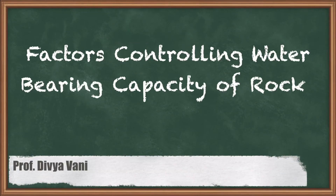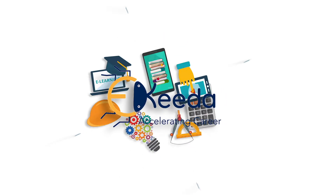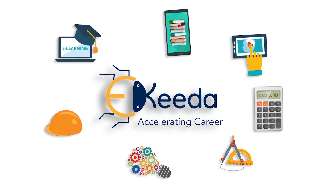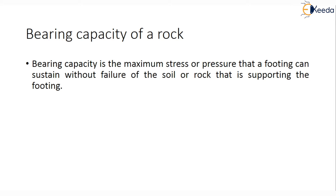Hello students, today we are going to learn the next topic in chapter 5: the various factors controlling the water bearing capacity of the rocks. Bearing capacity is the maximum stress or pressure that a footing can sustain without any failure of the soil or the rock which is supporting that footing. Bearing capacity is a function of the shear strength of the soil material or rock mass, but it also depends upon the size and shape of the footing and also the thickness of the soil or rock adjacent to and above the base of the footing.